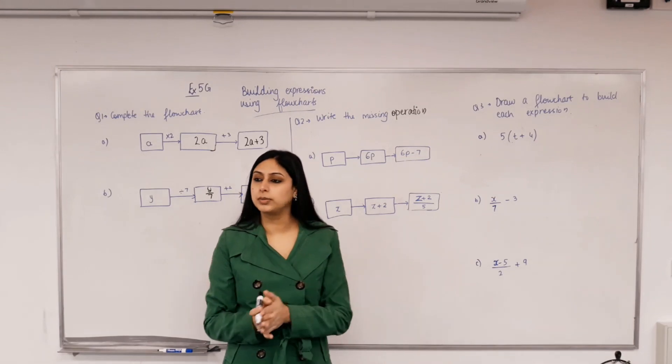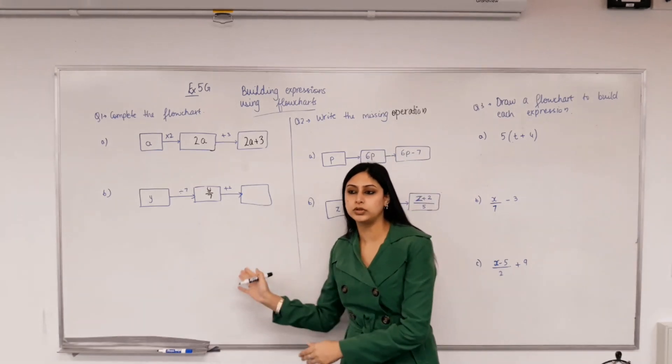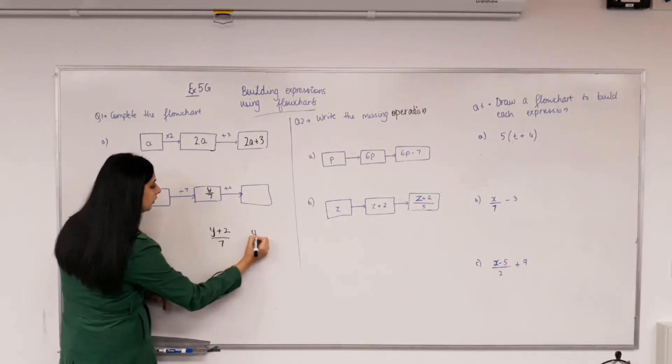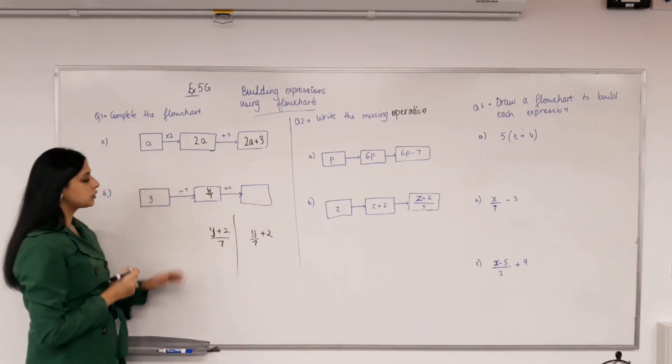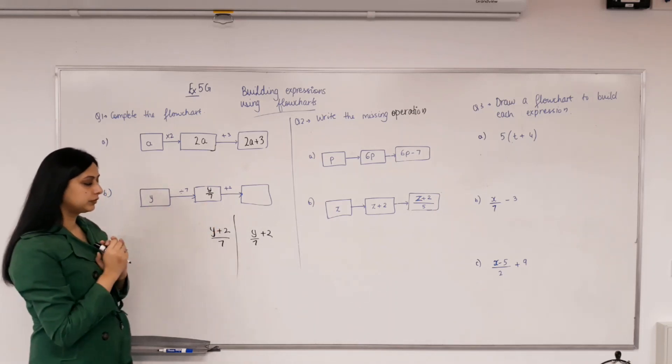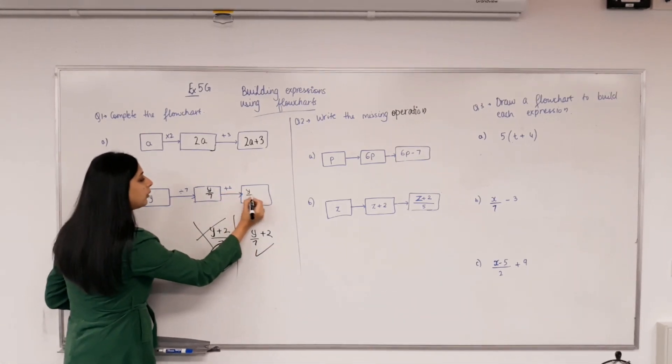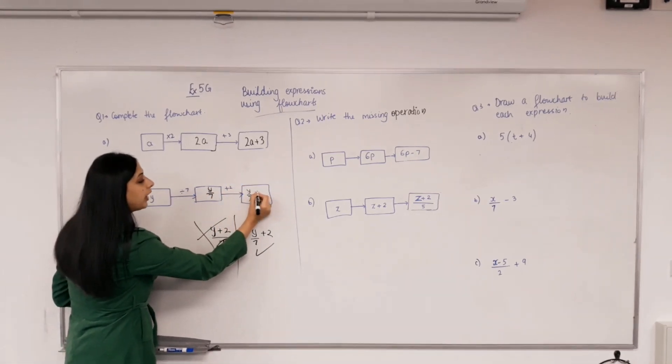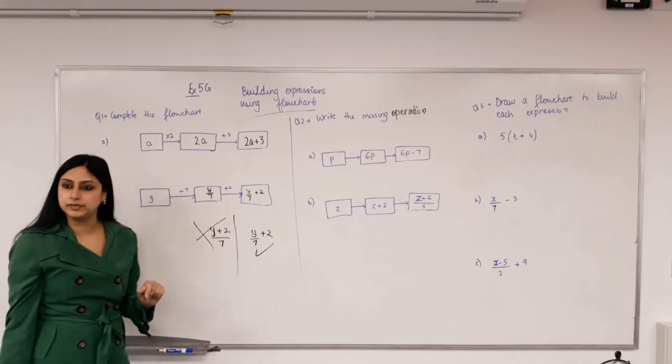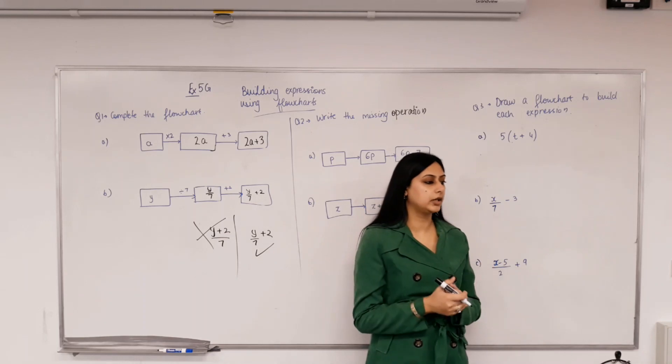Now whatever we have, we are adding 2 to it. Now there's two things I'm going to write, you have to choose which one is correct. Which one do you think is correct? So we have y divided by 7, we have to add 2 to it. So divide by 7 and add 2 to it, that is correct. This is correct because what was the expression you had here, y over 7, whatever you have you're adding 2 to it. But this one is different, this is add 2 first and then divide by 7. So in expression building, the order in which you're carrying out the operations is important. You can't do whatever you feel like.